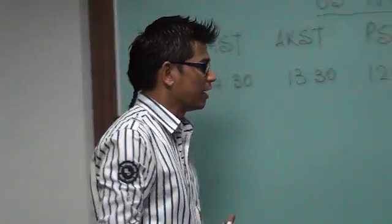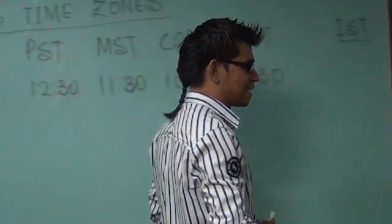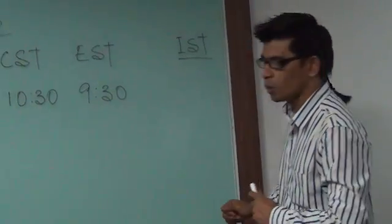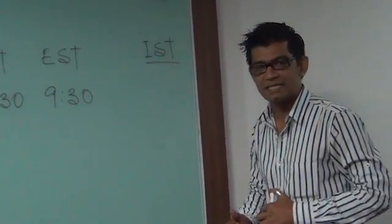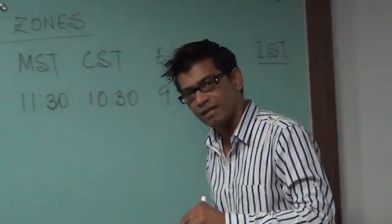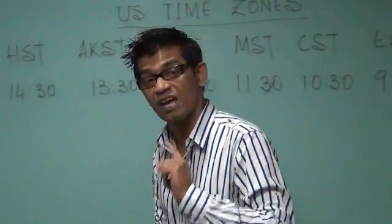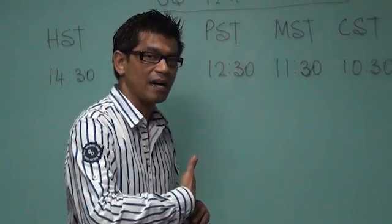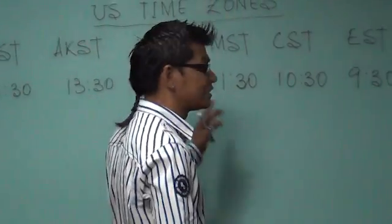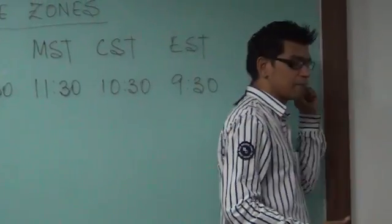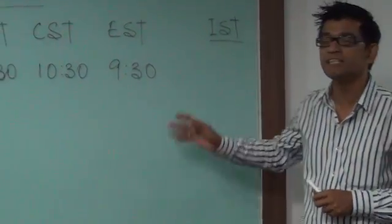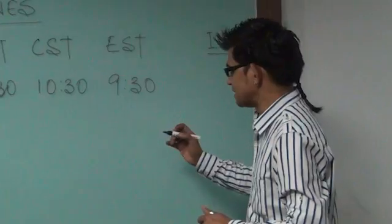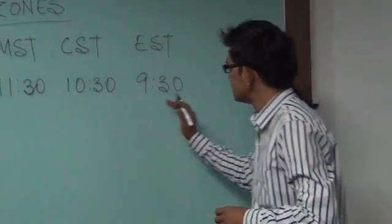Now, there is something called Daylight Saving Time. On the second Sunday of March, clocks in the US are moved ahead by one hour. So the difference between IST and these time zones increases by one hour during this period.